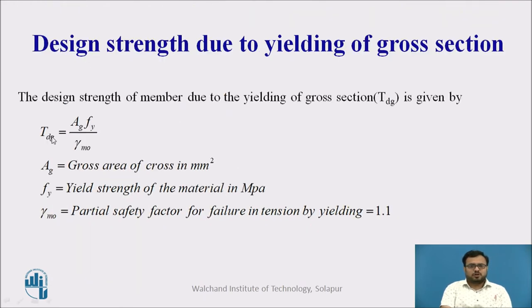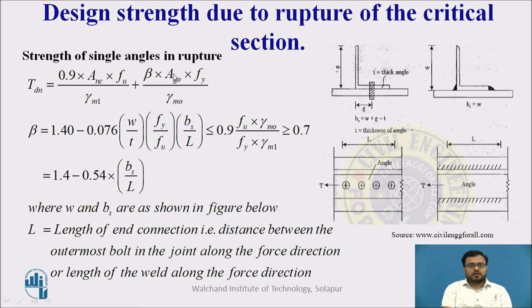The formula for design strength in gross section yielding, TDG is equal to Ag times Fy divided by gamma M0. In the case of net section rupture, for the angle section, TDG is equal to this formula. If you want to see the detail formulas, you can refer to my previous video. For the angle section, this is the formula. Beta is equal to this one.